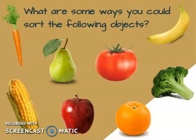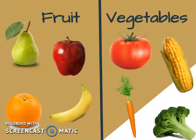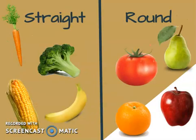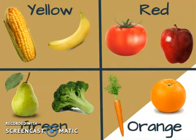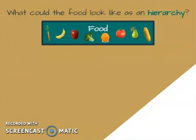Let's take a look at some other items. What are some ways that you could sort the following objects? Did you sort them by fruits or vegetables? Did you sort them by whether they were straight or round? Did you sort them by color? All these ways of sorting are great uses for our hierarchy. All of these things are food, so if I wanted one word to describe everything, it would be food.